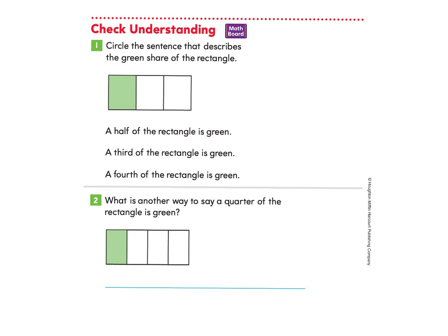Let's take a look at Check Understanding. Part one asks us to circle the sentence that describes the green share of the rectangle. I notice there are one, two, three shares and only one third of the shape is colored in. The first option — a half of the rectangle is green — is not correct. A third of the rectangle is green — that is correct. One of the three is green, so we circle that. A fourth of the rectangle is green is also not correct because this shape is not in four pieces.